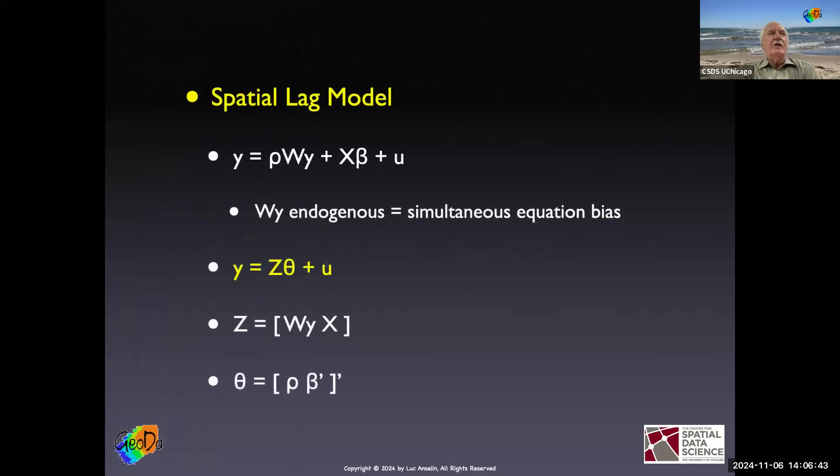So spatial two-stage least squares, what is it? Basically, two-stage least squares applied to the spatial lag model, which has endogeneity in the spatially lagged dependent variable, the WY, and possibly also additional endogeneity. With maximum likelihood, there was no way to handle that. But with this framework, because we can handle as many endogenous variables as we want, as long as we have enough instruments, there's no constraint on incorporating endogeneity in our specifications.